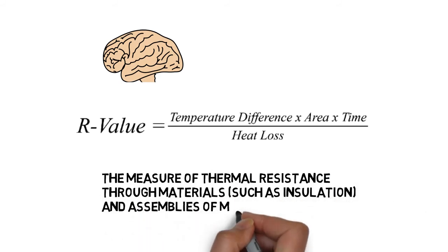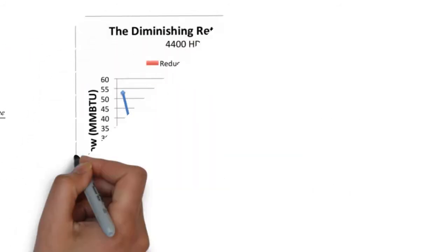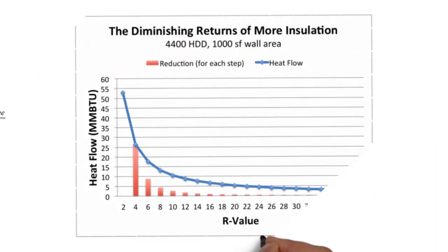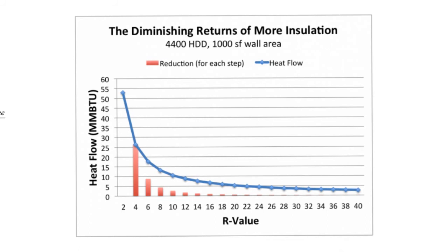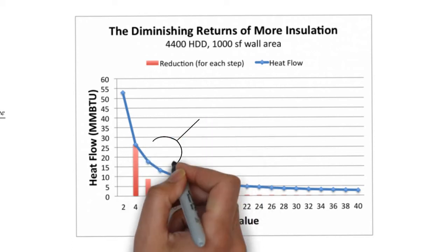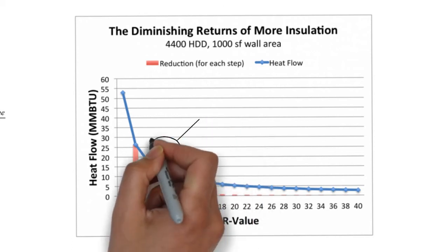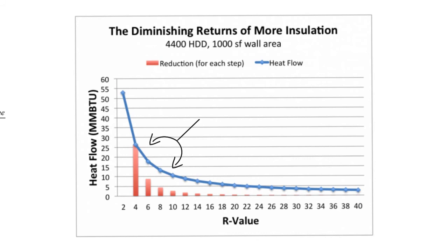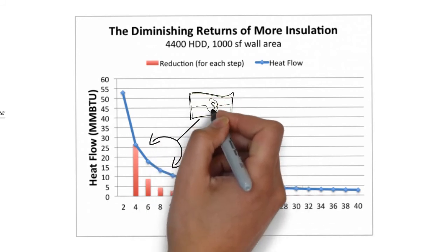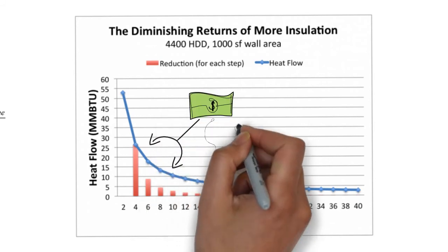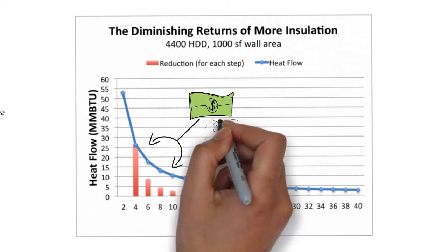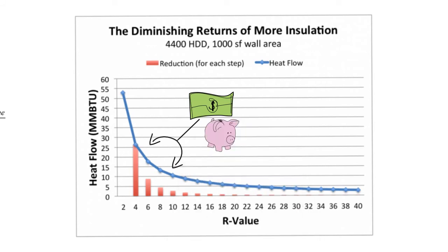In this graph we can see that adding any insulation to an uninsulated home can save much more energy than adding more insulation to an already insulated home. The most energy savings occur initially when you gradually increase your R-value. Optimal values are between 4 and 8. Adding much more insulation beyond that won't bring significant savings, and the cost will be much higher.